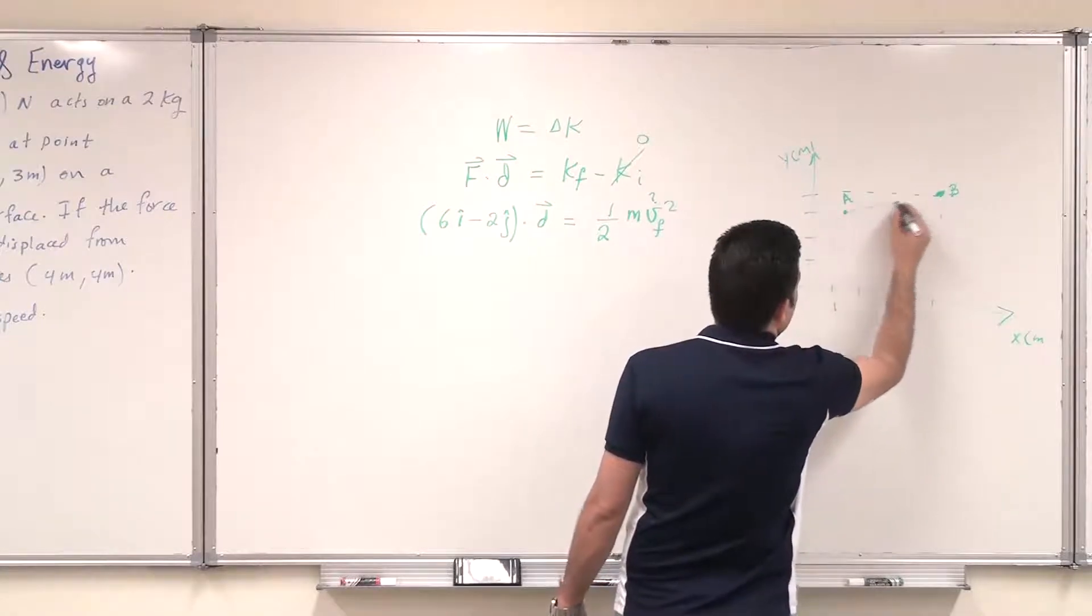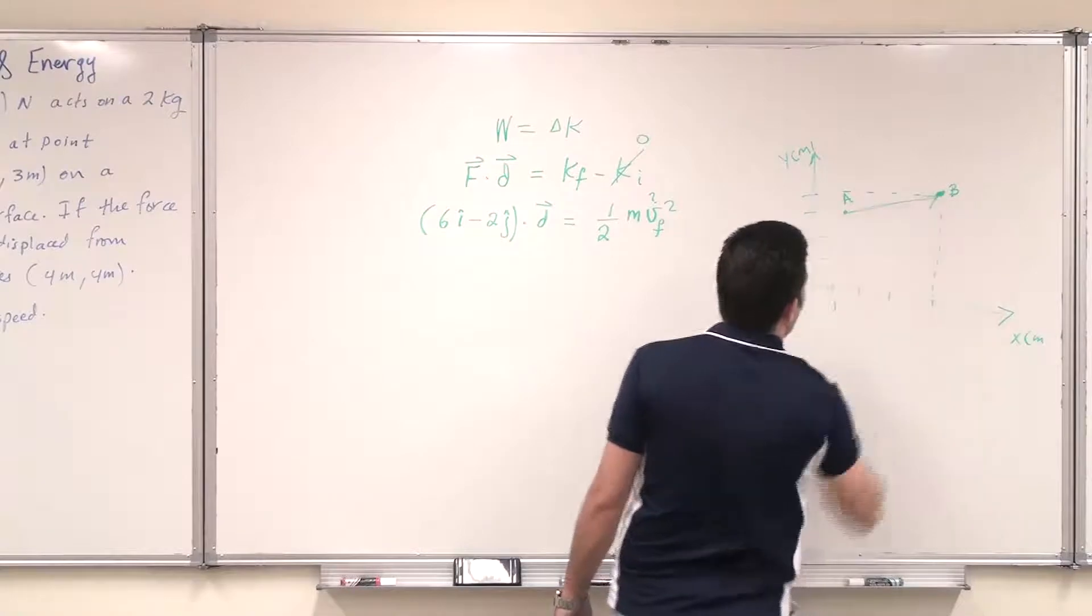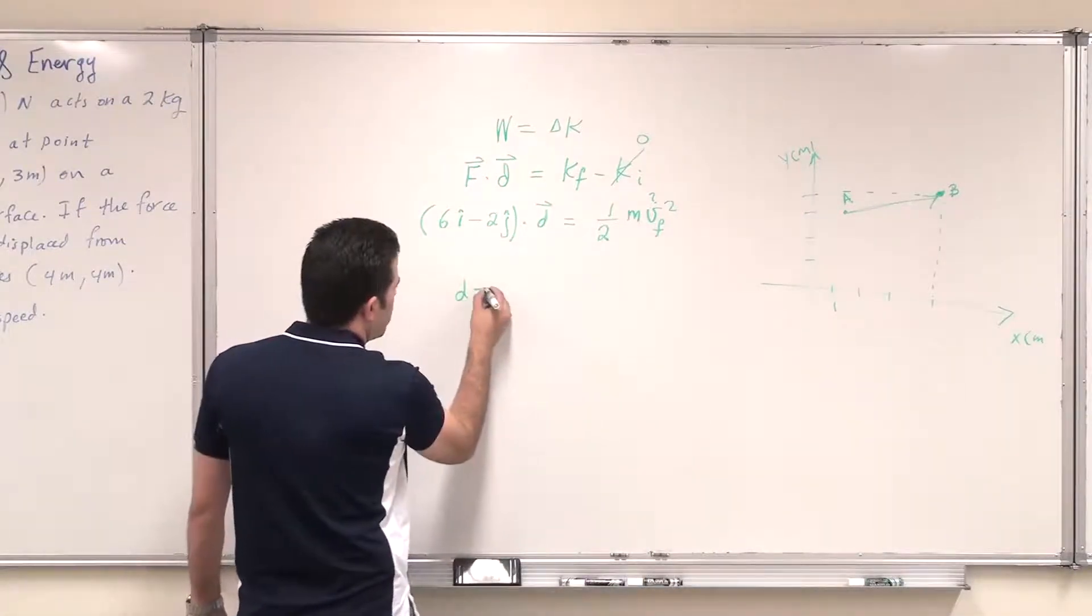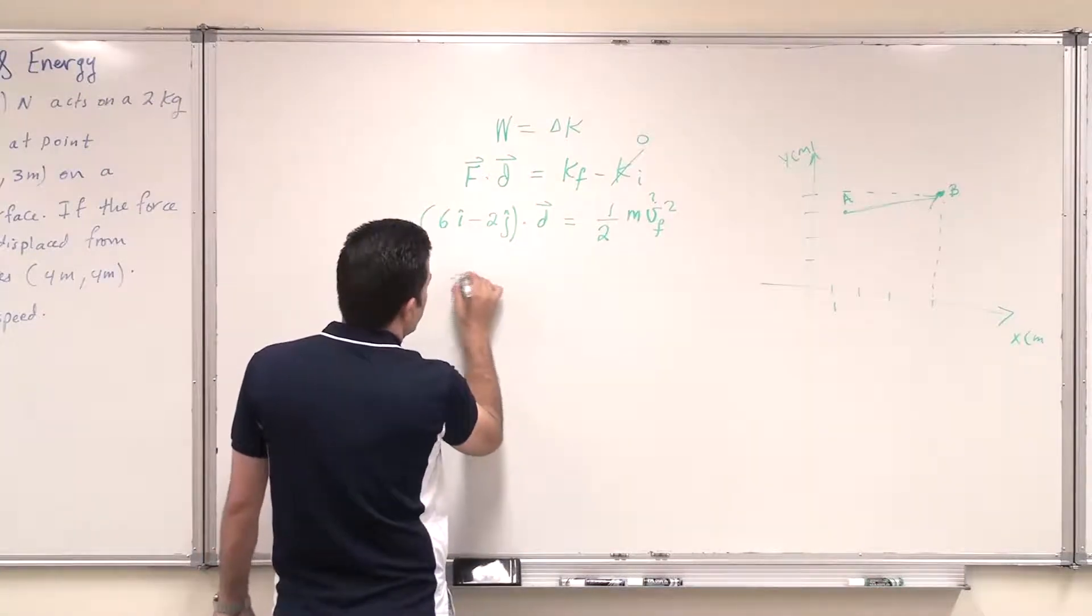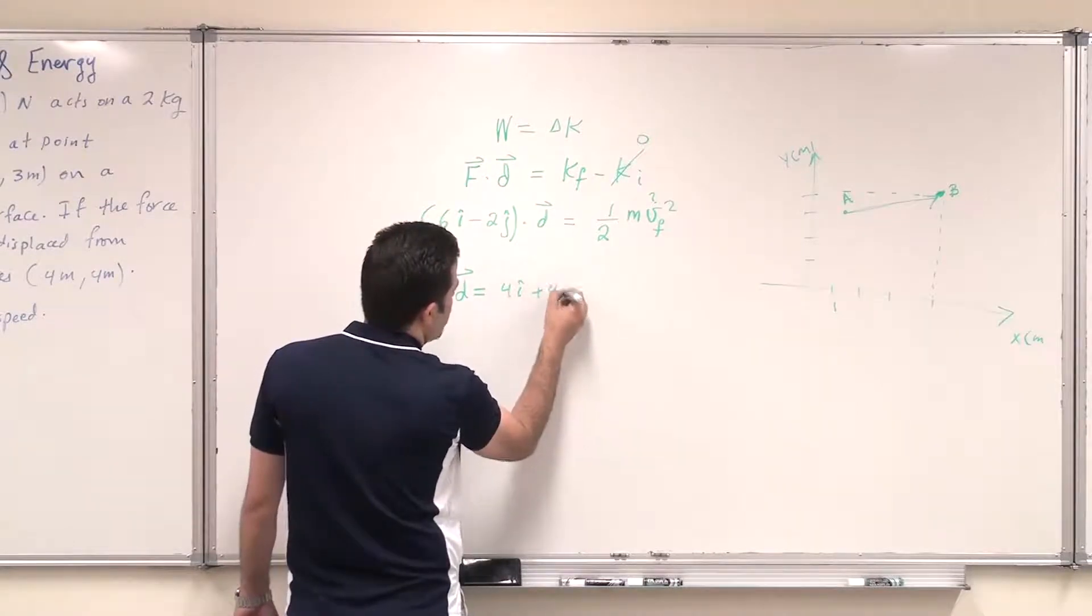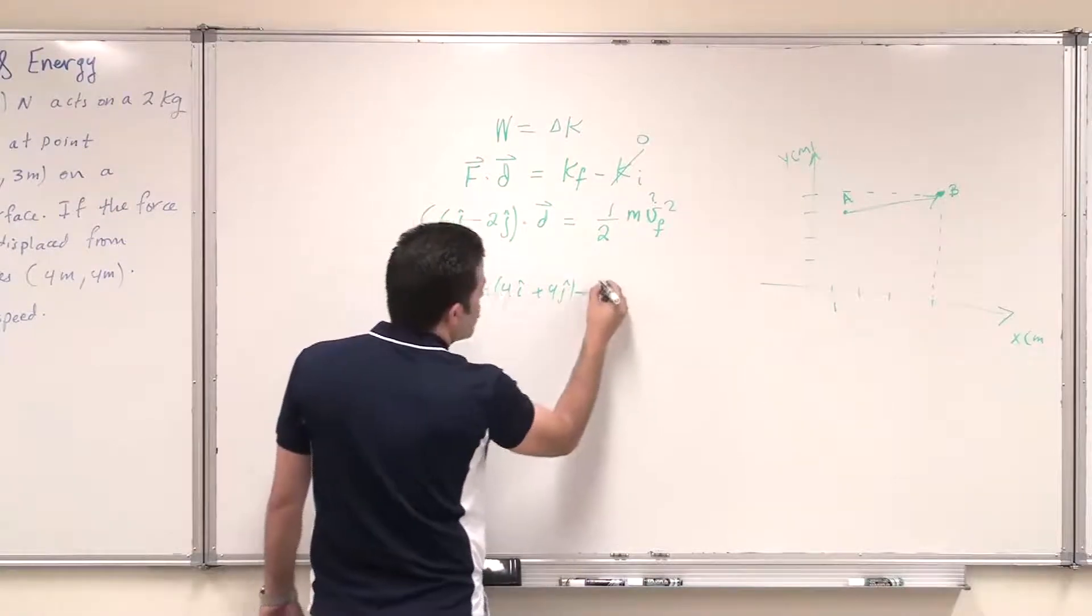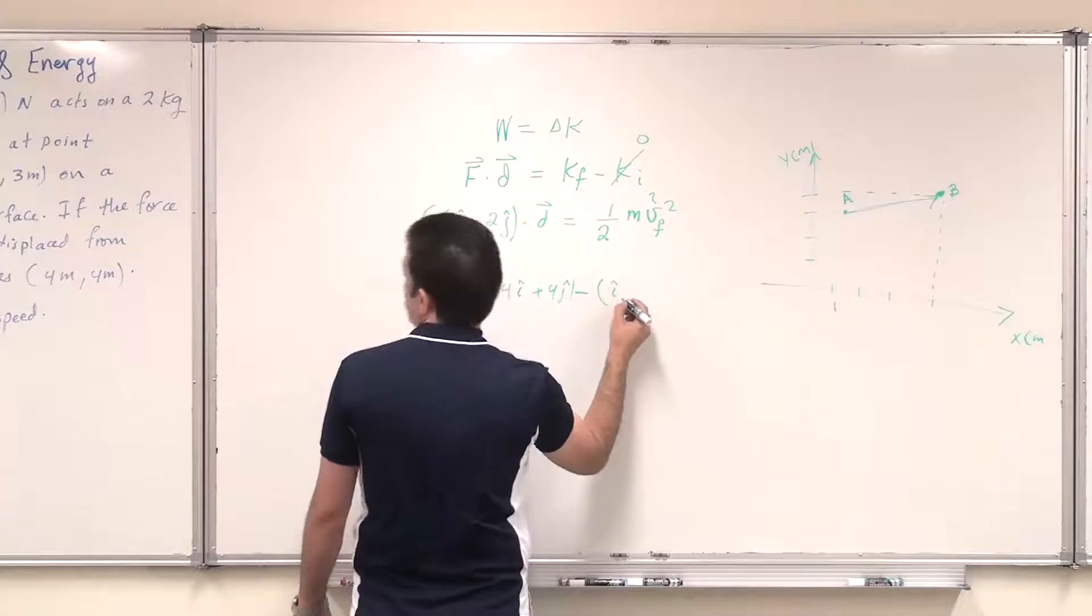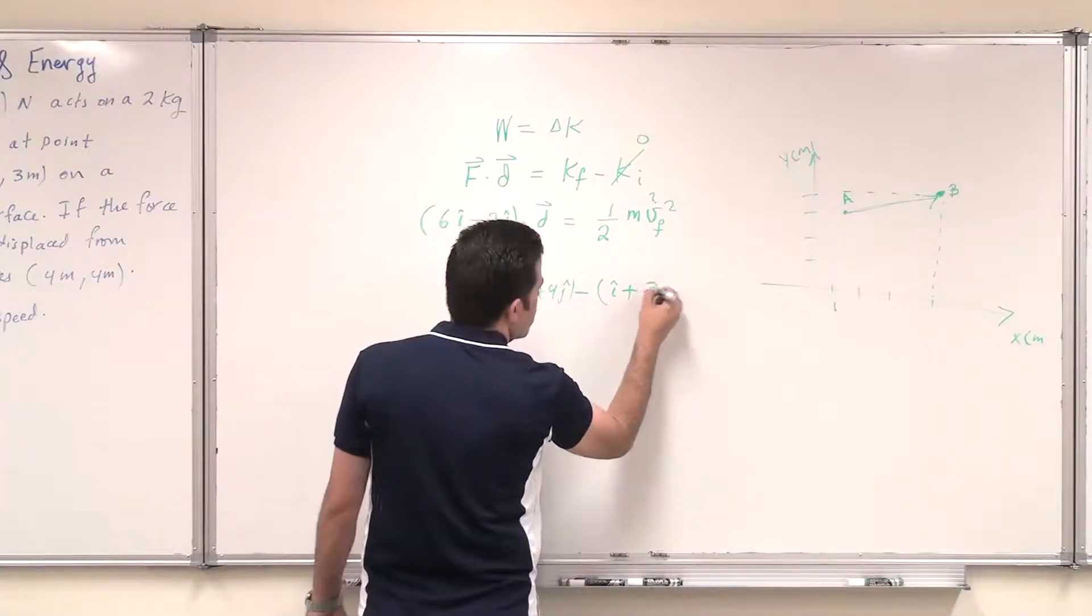So the displacement is this displacement. This displacement will equal the coordinate of B, which is 4i hat plus 4j hat minus the coordinates of A, which is i hat plus 3j hat.